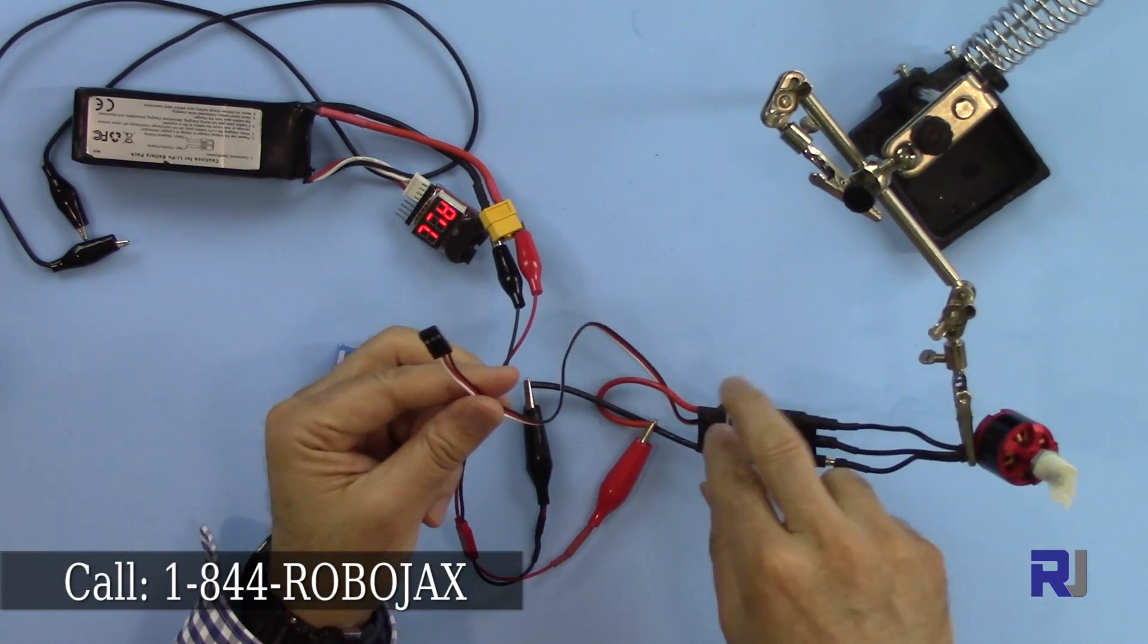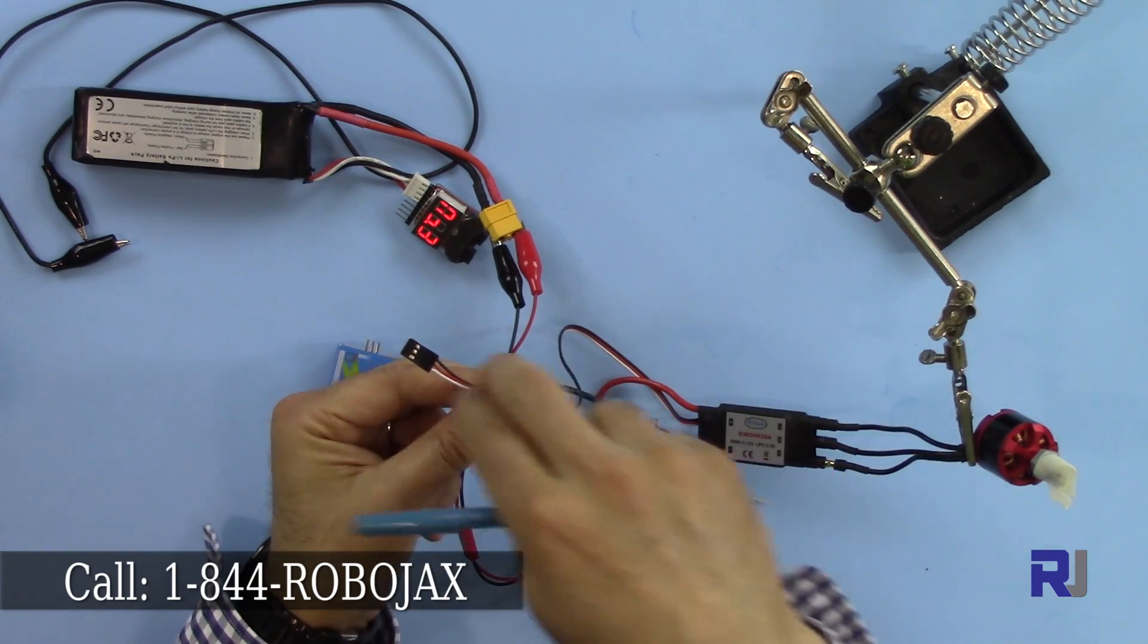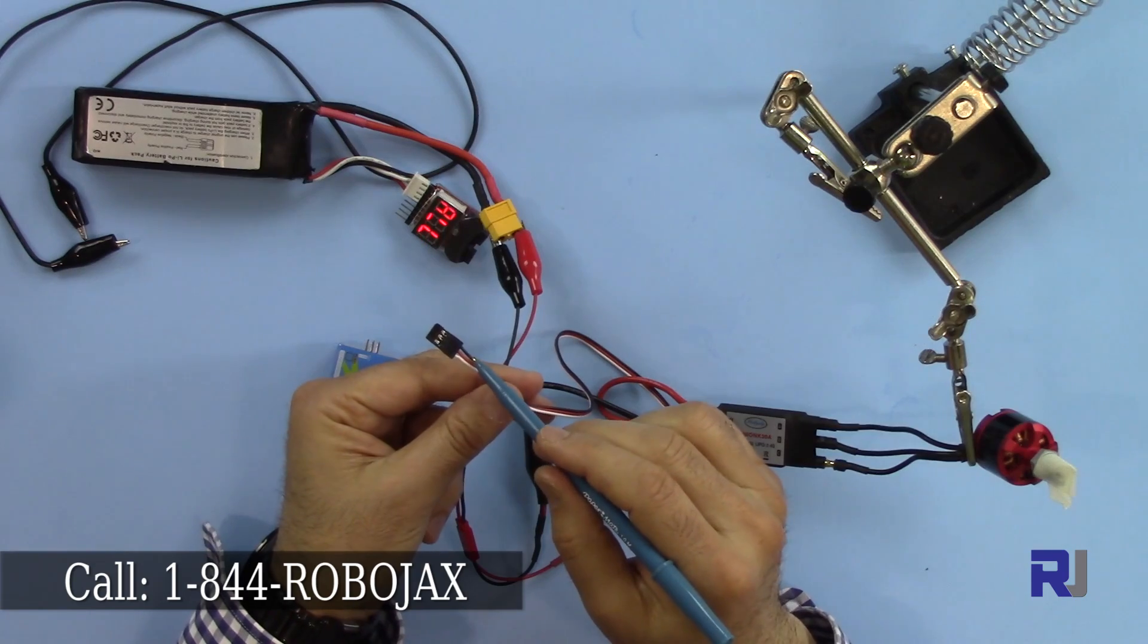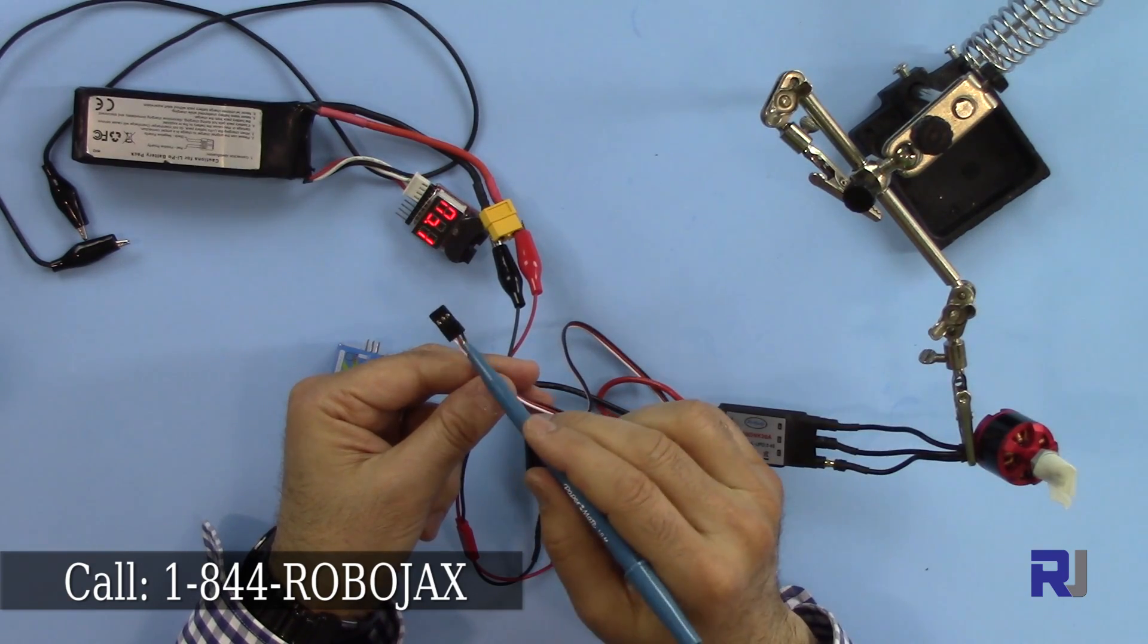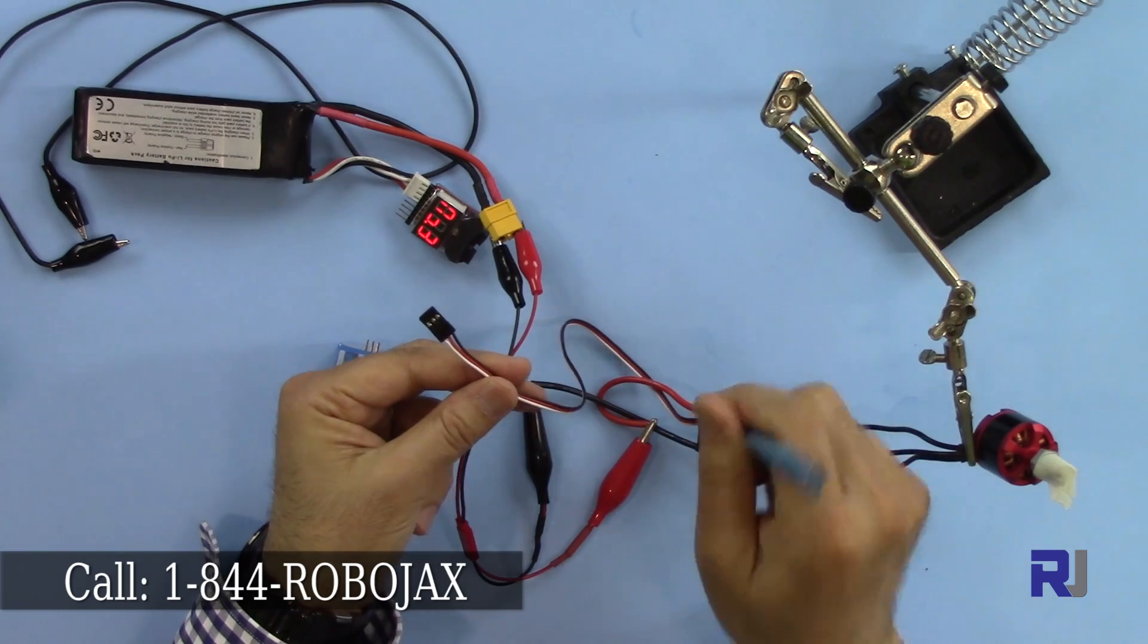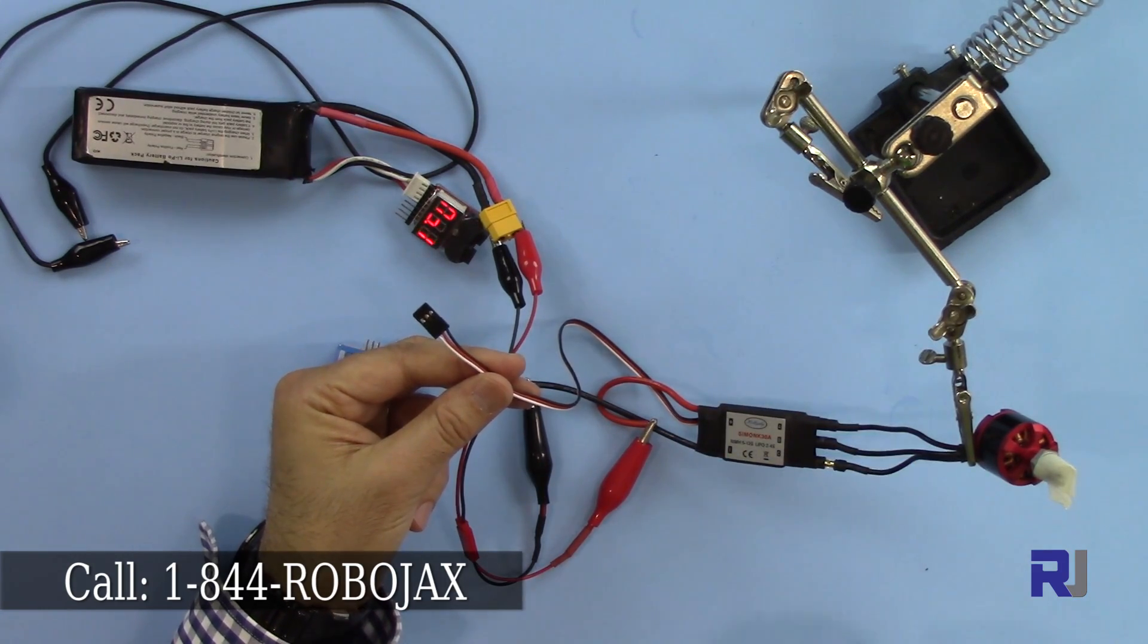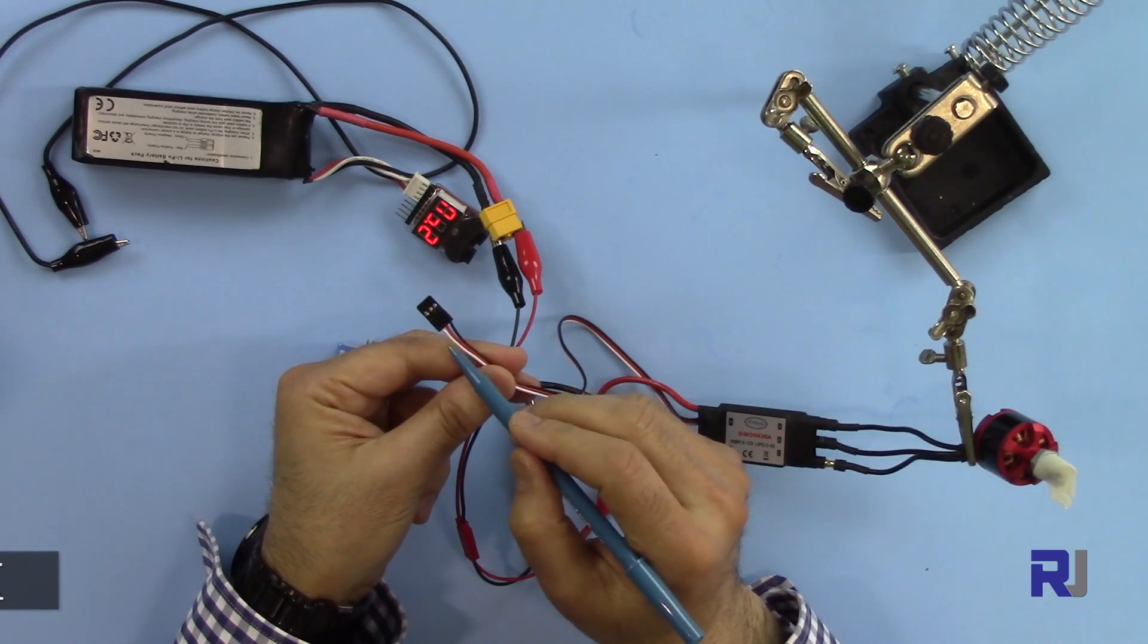And now my ESC provides 5 volts through this red and black. So 5 volts is coming out of ESC. This is usually connected to flight controller or any other devices if you need that 5 volts, depending on the type of the device, around one or two or three amperes.